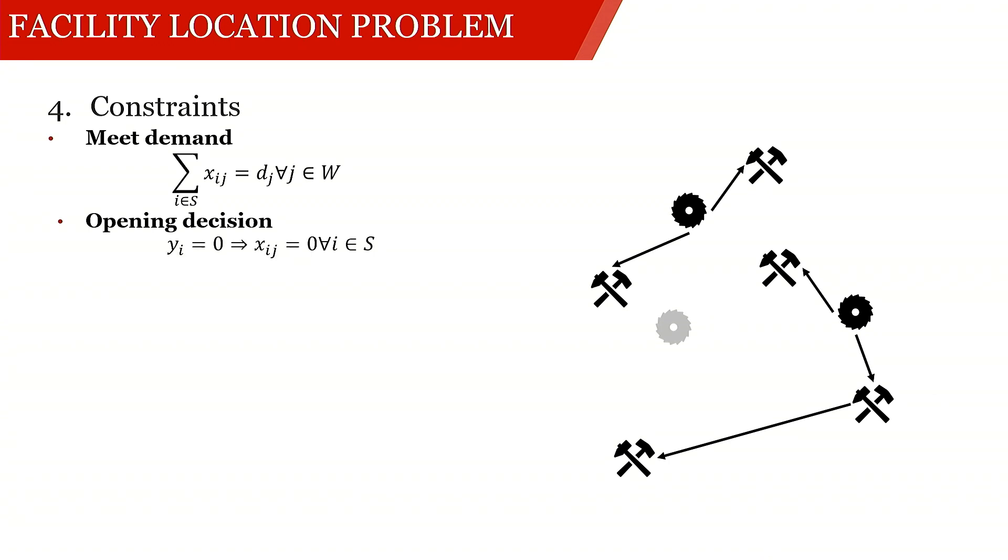And we're formulating this by saying if yi is 0, so if the sawmill is closed, the flow has to be 0. The flow from this sawmill to any other workshop has to be 0. So we're formulating this by saying that the sum over all xij has to be less than or equal to m times yi, and that for all sawmills.